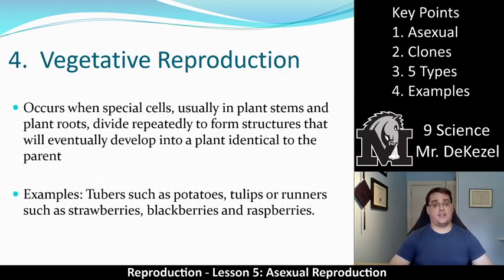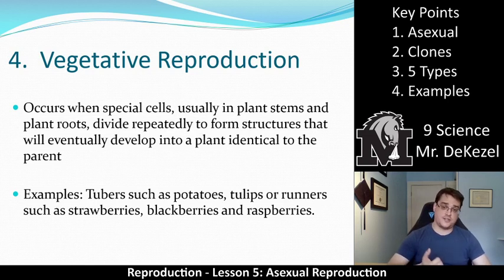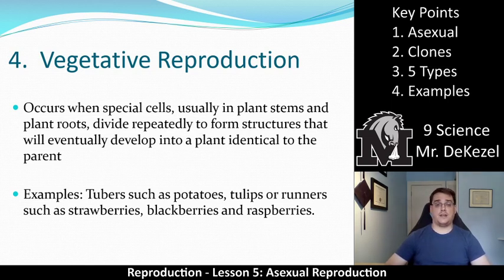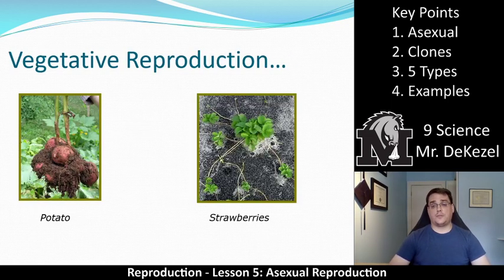Type four is vegetative reproduction. Special cells in plants divide repeatedly to form structures that eventually make a plant identical to the parent. For example, take a potato, cut it up, plant it, and it will grow a whole new potato plant. You can then do that again and again. Other examples include tulips, and runners like strawberries, blackberries, and raspberries — all can be propagated by taking a piece and planting it. As you can see with strawberries, the plant sends out little runners that go out and essentially plant themselves.